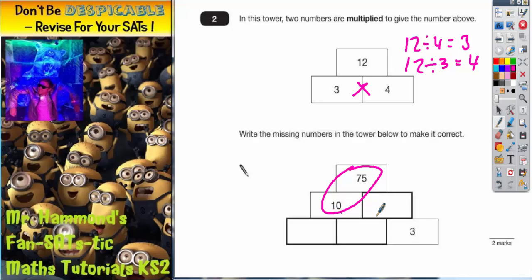If 10 times this mystery number gives us 75, then if we work in reverse and do 75 divided by 10, we'll get the number that goes here. So 75 divided by 10 is 7.5.